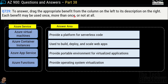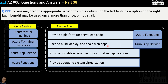Question number 729 is a drag-and-drop question where you match Azure services on the left with definitions on the right. Services given: Azure Virtual Machines, Azure Container Instances, Azure App Service, and Azure Functions. 'Provide a platform for serverless code' matches Azure Functions. 'Used to build, deploy, and scale web apps' matches Azure App Service. 'Provide portable environment for virtualized application' matches Azure Container Instances. 'Provide operating system virtualization' matches Azure Virtual Machines.